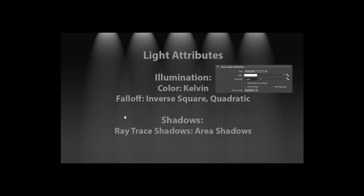Inside of Maya they don't use the term inverse square — they use the term quadratic. Quadratic is what you want for your decay rate. By default when you make an area light — which is pretty much the only light you want to use inside Maya — it will say no decay. You'll want to turn it to quadratic so it actually falls off. In Maya, you use an area light and then modify it. For color, you would click on the color button and get a Kelvin node to plug in there so that controls the color.